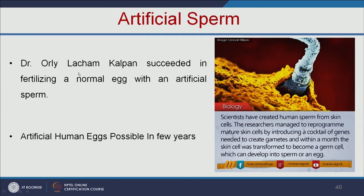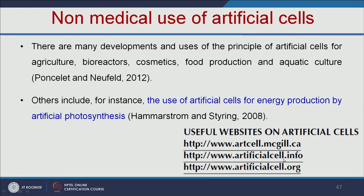A recent breakthrough is the creation of artificial sperm. Nowadays a major problem is infertility. This research group made artificial sperm and is trying to make artificial human eggs as well. They created human sperm from skin cells by reprogramming them with introduced genes — within a month the skin cell became a germ cell, which can develop into sperm or an egg. These artificial cells are not only for biomedical applications but also for non-medical uses such as cosmetics, food production, and energy production through artificial photosynthesis.